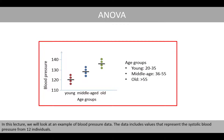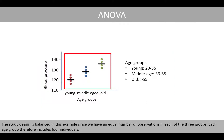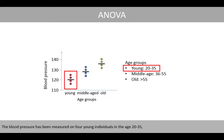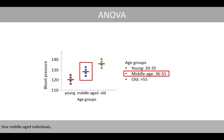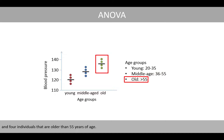In this lecture, we'll look at an example of blood pressure data. The data includes values that represent a historic blood pressure from 12 individuals. The study design is balanced in this example, since we have an equal number of observations in each of the three groups. Each age group therefore includes four individuals. The blood pressure has been measured on four young individuals in the age 20 to 35, four middle-aged individuals, and four individuals that are older than 55 years of age.